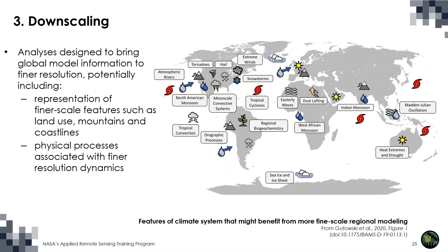Another key aspect of projection sets is the extent to which downscaling has been applied. Downscaling is a process by which we bring global model information to a finer resolution, potentially including representation of finer-scale features such as land use, mountains, and coastlines. Downscaling can also allow us to represent physical processes associated with finer-resolution dynamics — including mesoscale processes such as severe storms, tornadoes, and hail; interactions between precipitation and topography associated with a monsoon; local orography; dynamics around mountains and valleys; and features within tropical cyclones that cannot be captured on global grid cell resolutions.